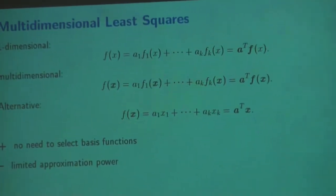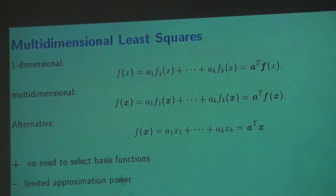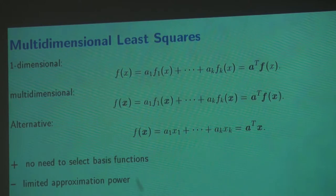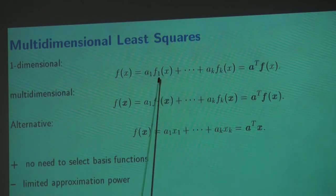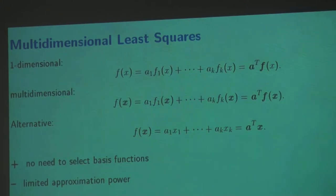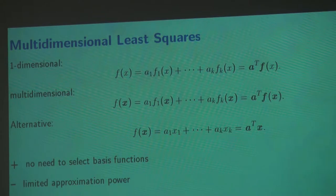When we derived the method, we talked about one-dimensional least squares. You have to determine the normal equations and then solve the normal equations — then you have the coefficients. You get K coefficients, one coefficient for each one of the K basis functions. Even though we are approximating a function depending on only one variable X, we still have to solve a K by K system because we have K coefficients.